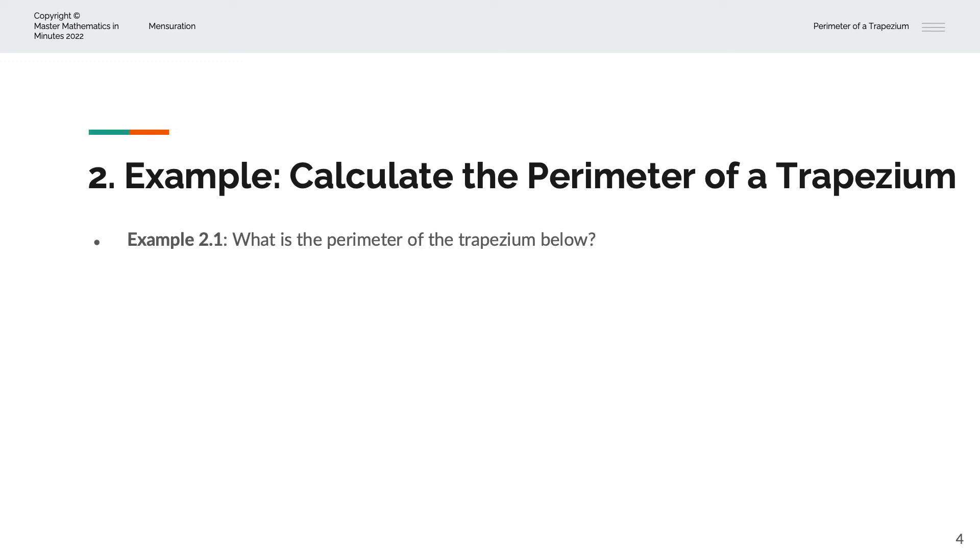In the first example, we're asked to calculate the perimeter of the trapezium below. So we have a trapezium of sides 4, 5, 11 and 7 centimeters. And so the perimeter, P, is equal to 4 plus 5 plus 11 plus 7. And that is equal to 27 centimeters.